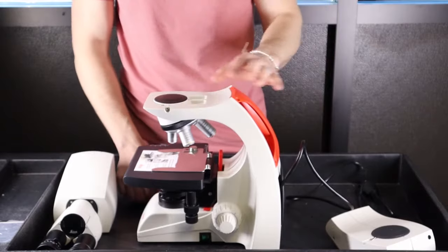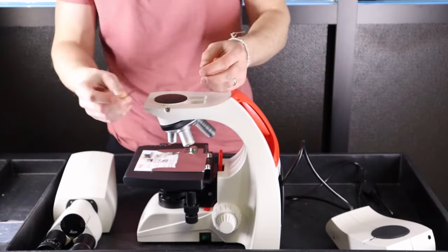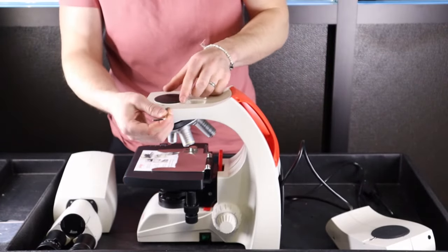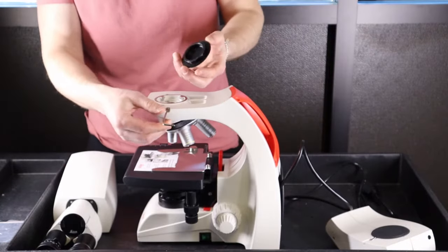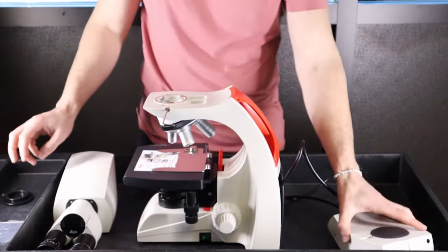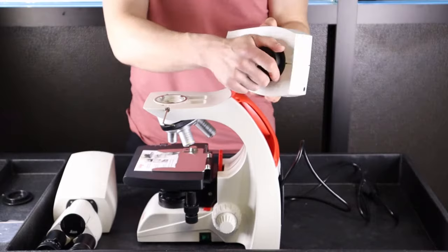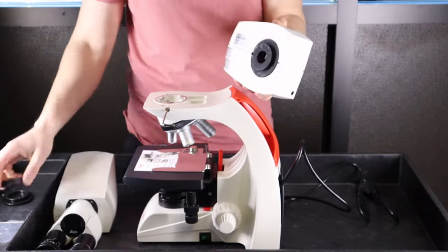Next, you're going to assemble the camera system with the head. Take your allen wrench that's included and loosen this screw here to remove the first black cap. Grab your camera and remove this black cap.